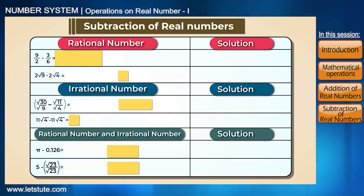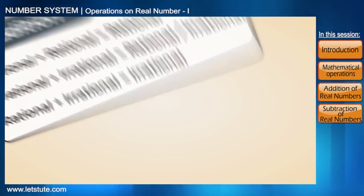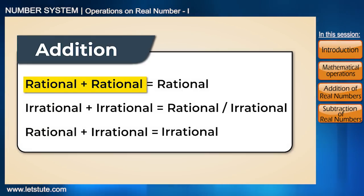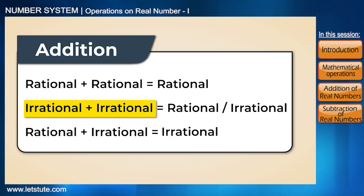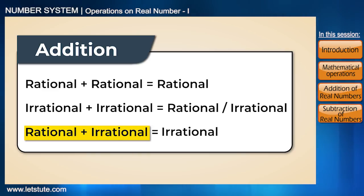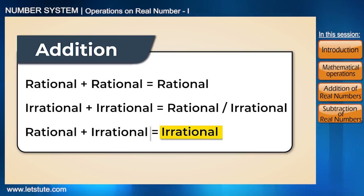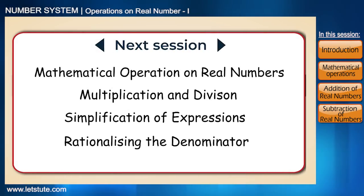As you can see, these properties hold true for subtraction as well. So, to summarize what we've learned: adding two rational numbers gives a rational number; adding two irrational numbers gives a rational or irrational number; and adding a rational and an irrational number gives an irrational number. These properties also hold for subtraction. In the next session, we'll learn about remaining properties and how to simplify expressions and rationalize the denominator.